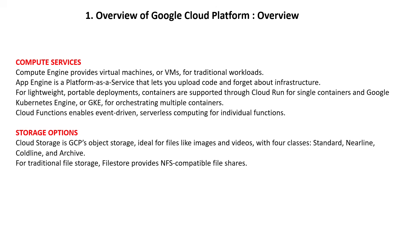GCP offers several ways to run your applications. Compute Engine provides virtual machines, or VMs, for traditional workloads. App Engine is a platform as a service that lets you upload code and forget about infrastructure. For lightweight, portable deployments, containers are supported through Cloud Run for single containers.